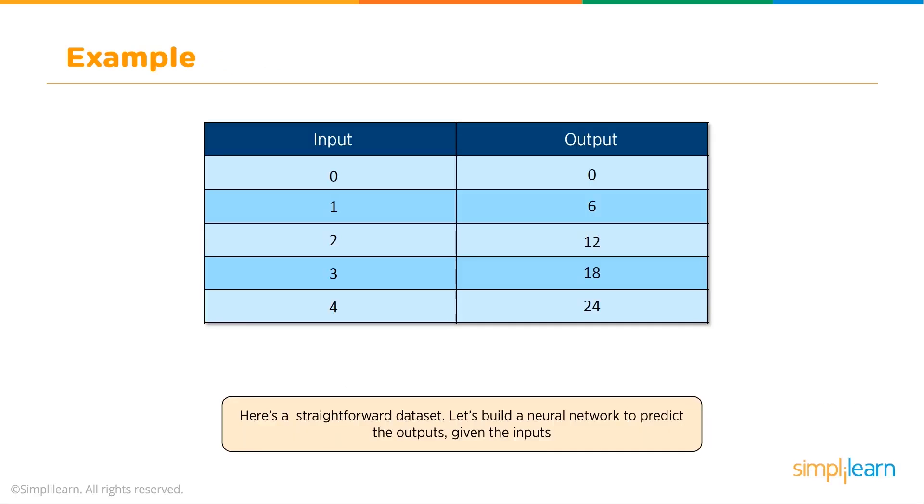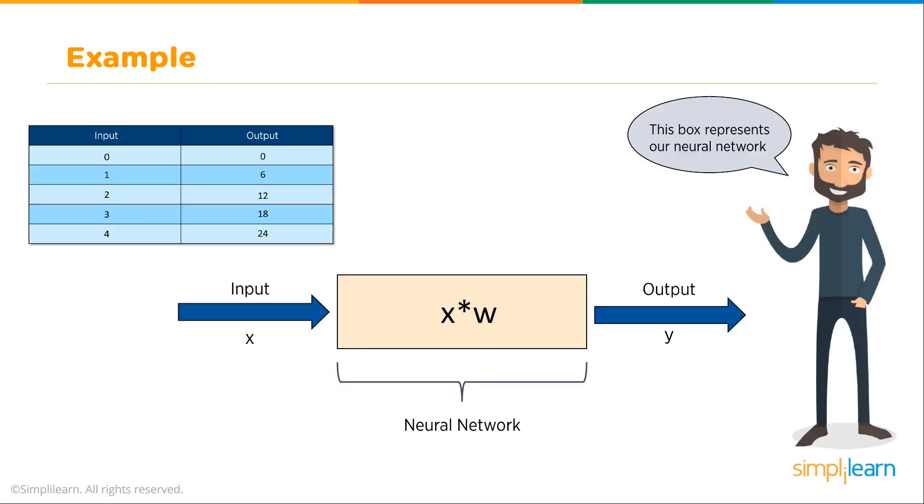Let's take a look at this. Here's a straightforward data set. Let's build a neural network to predict the outputs given the inputs. We have an input 0, we expect an output of 0. Input of 1, we expect 6. 2 equals 12, 3 should come out as 18, and 4 is 24. We're just doing multiples of 6. In our example, we have our input, and it goes into our neural network. This box represents our neural network. One of the cool things about neural networks is there's always this little black box that you train to do what you want. You really don't have to know exactly what the weights are, although there are some very high-end setups that start looking at those weights. And then you get your output, which is going to be, in this case, our input's going to be x and our output's going to be y.